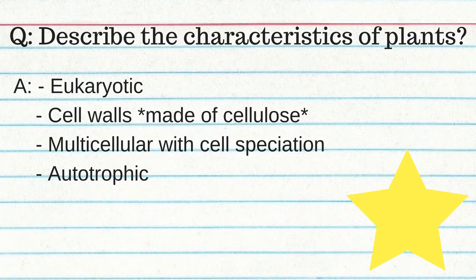Plants are eukaryotic, have cell walls made of cellulose, are multicellular with cell specialization, and are autotrophic. Transport uses xylem and phloem: water enters through the roots and is transported upward through xylem; the phloem transports sugars made in the leaf to the rest of the plant. Plants excrete CO2 and water from cellular respiration, and O2 and water vapor from photosynthesis — exits through the stomata.